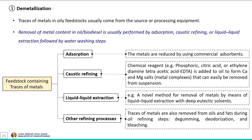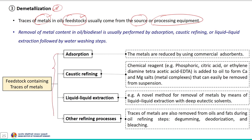Another important technique is demetallization. In this process, traces of metals present in the oily feedstock materials are removed using a preferred technique. These traces of metals usually come from the source material or processing equipment. Various techniques are available for the removal of metal content in oil or biodiesel, which include adsorption, caustic refining, liquid-liquid extraction and other refining processes. The suitable technique needs to be selected to remove the metal content.